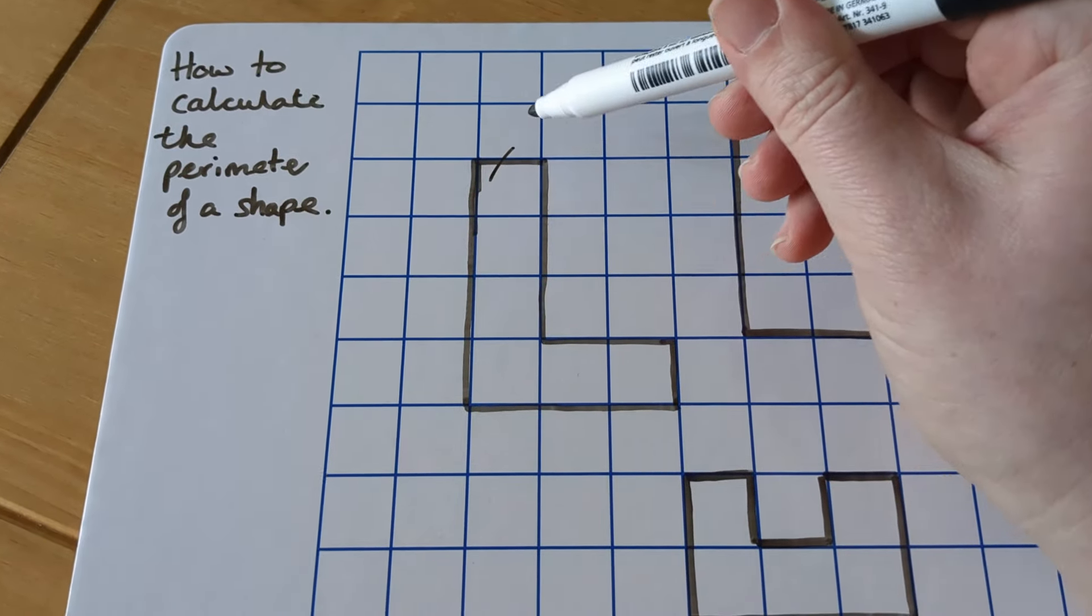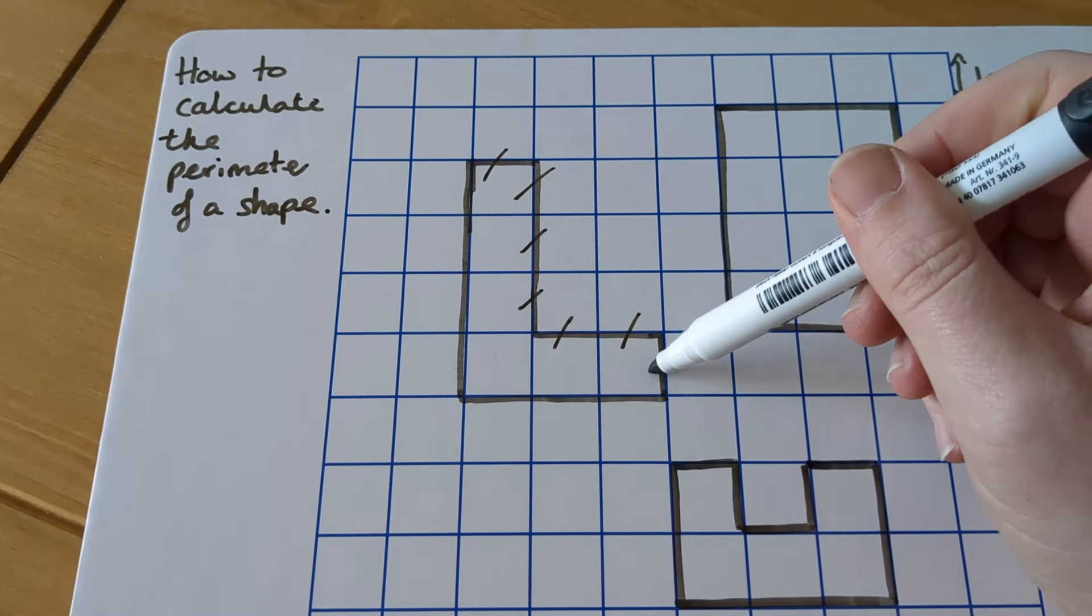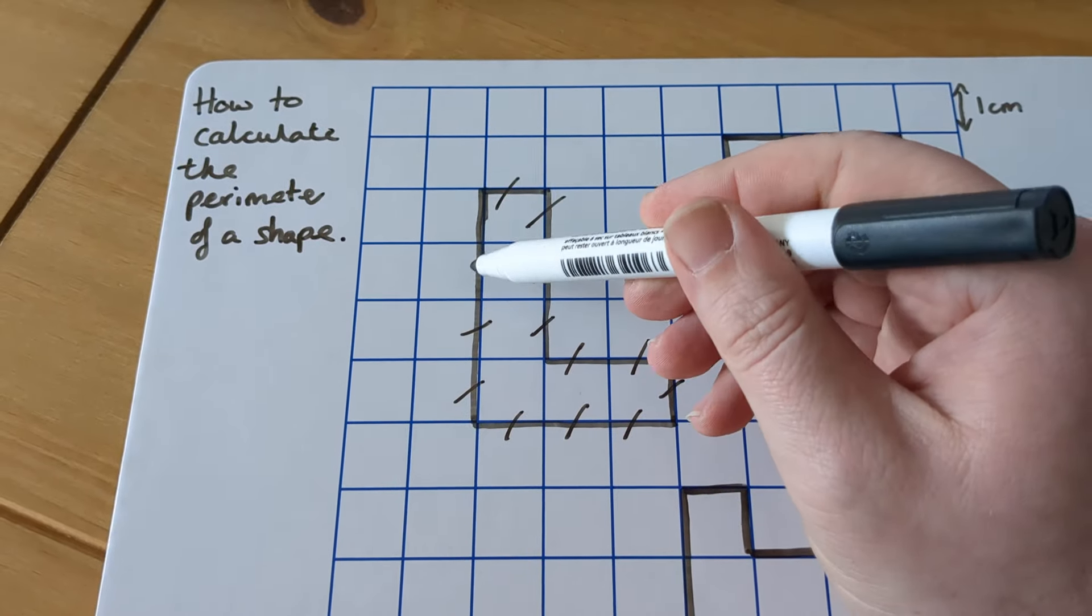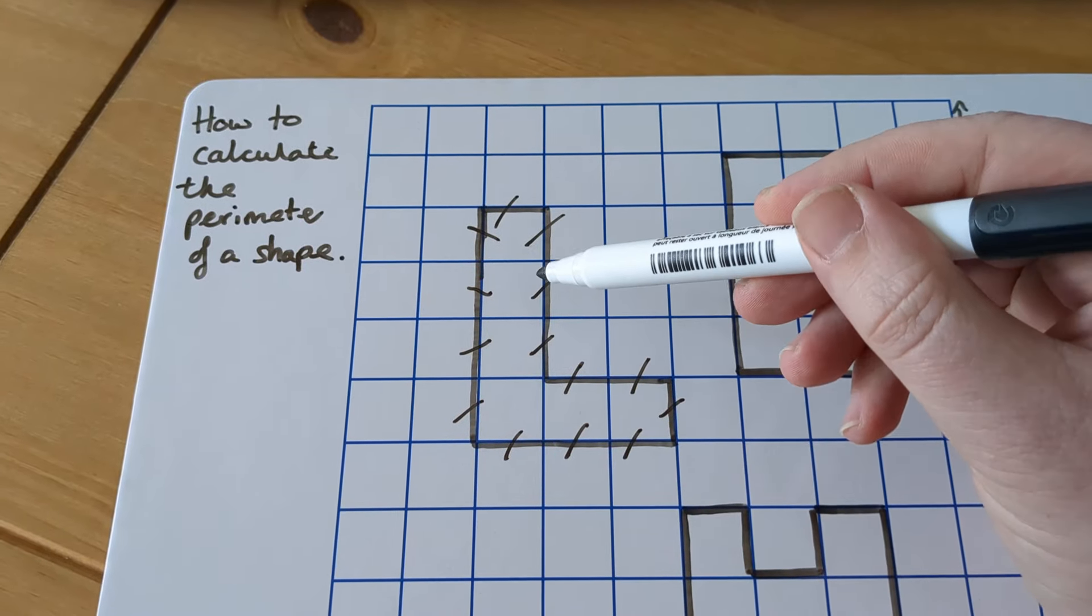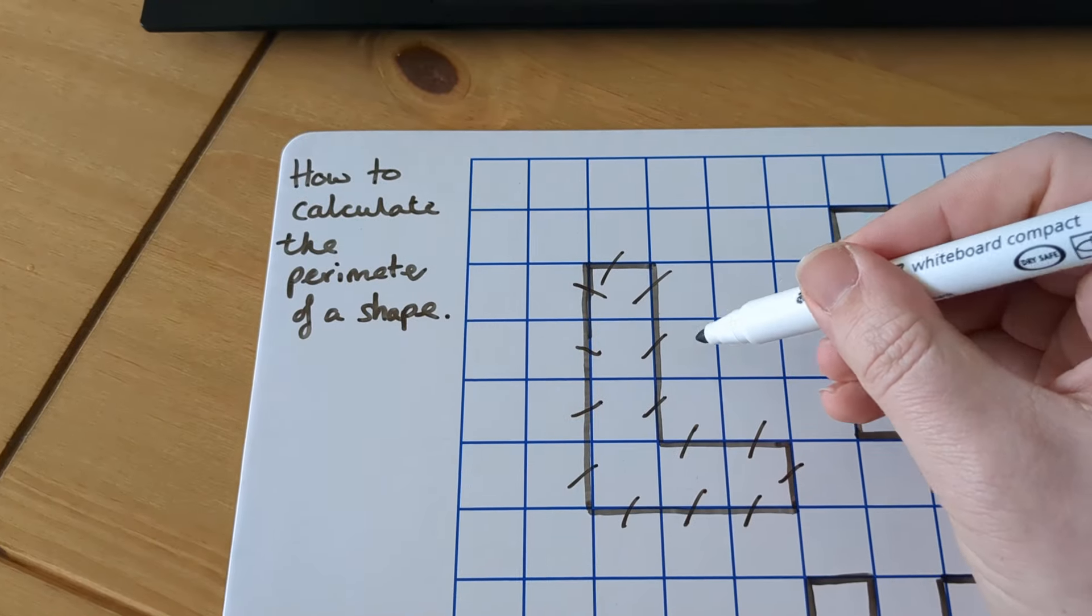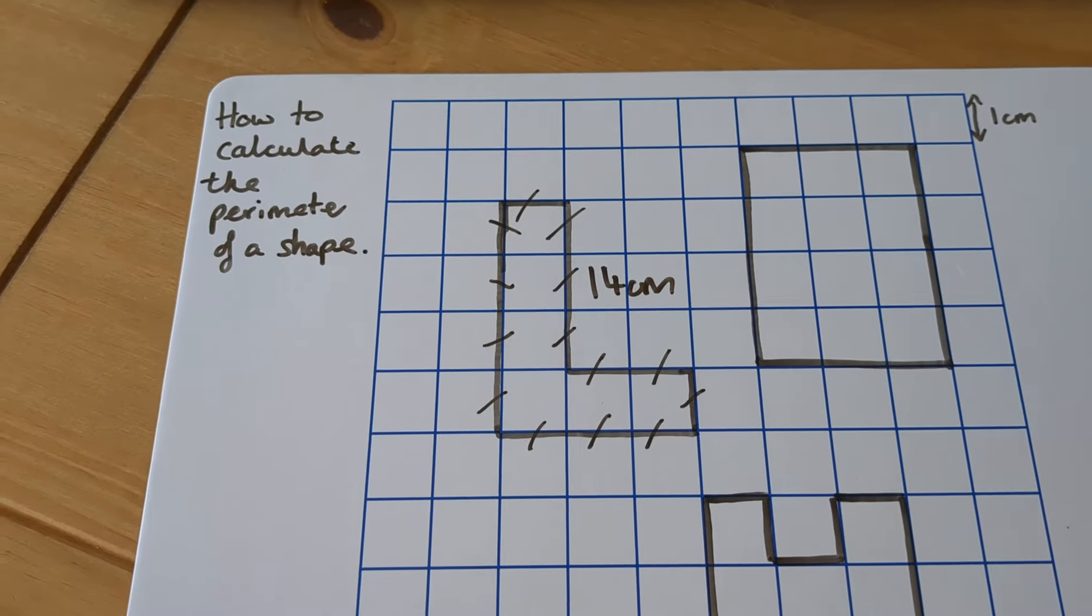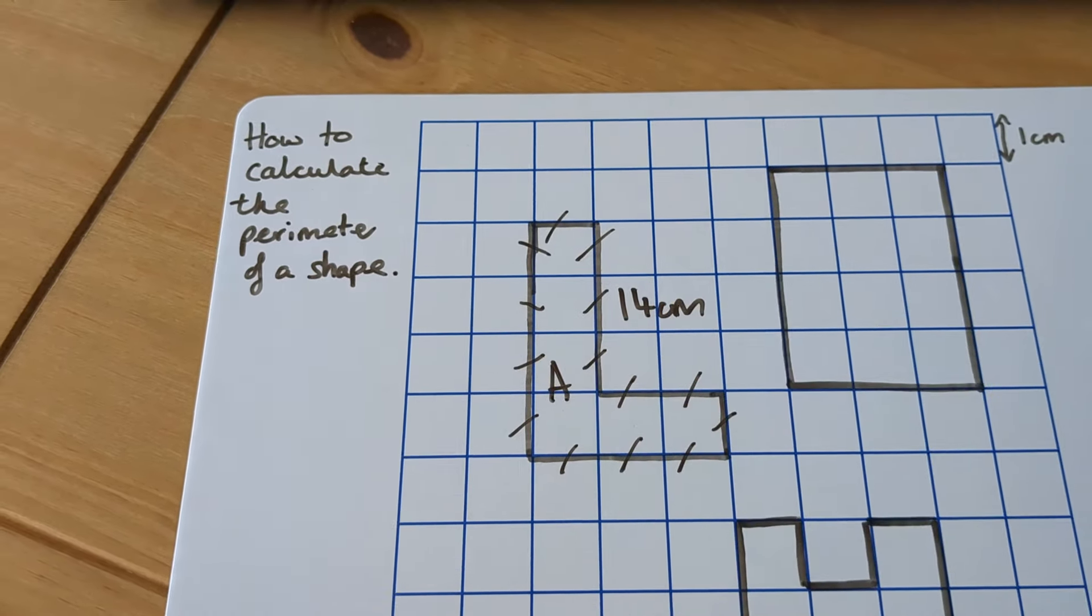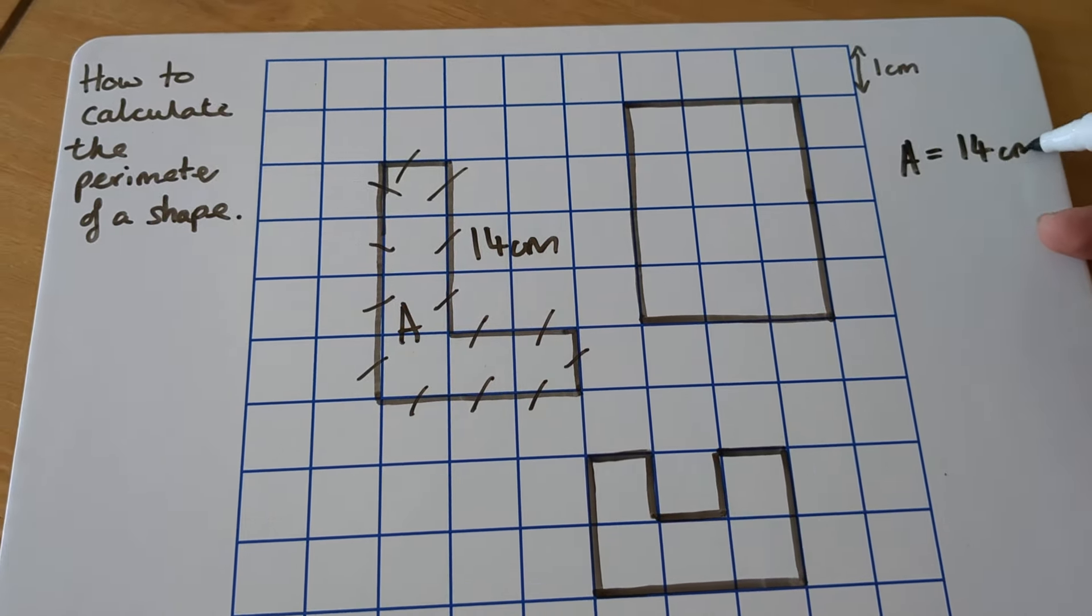So we've got 1, 2, 3, 4, 5, 6, 7, 8, 9, 10, 11, 12, 13, 14. So in total there are 14 sides here, each one a centimeter. So we can say that is 14 centimeters for the perimeter. The perimeter of this shape, let's give that a letter. We'll call that A. So A equals 14 centimeters for the perimeter.